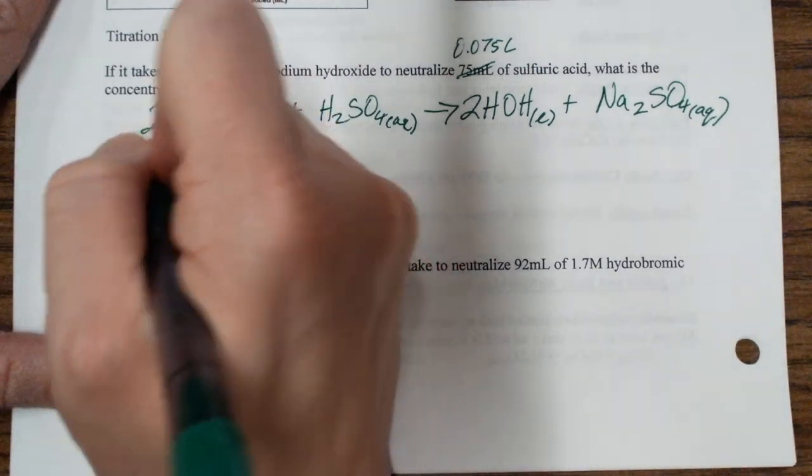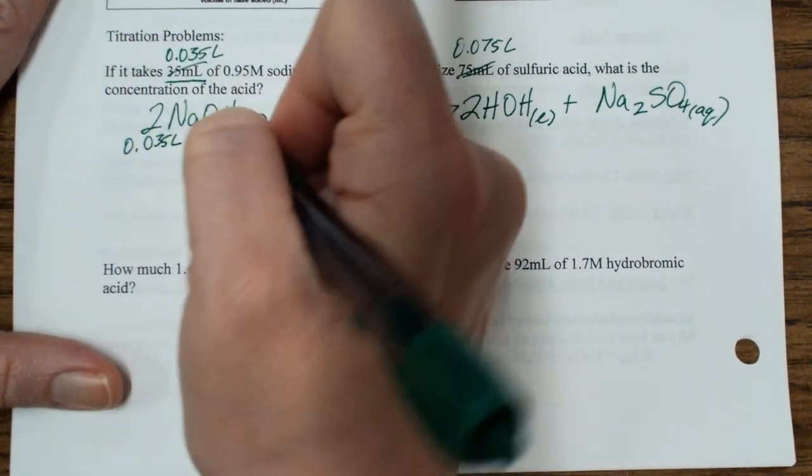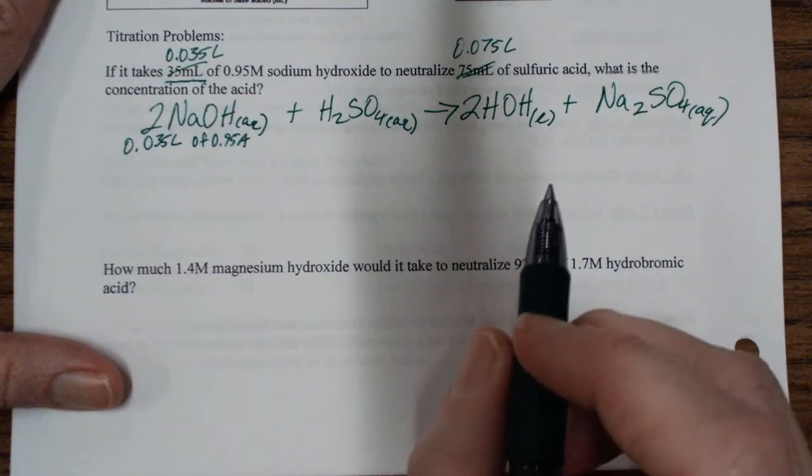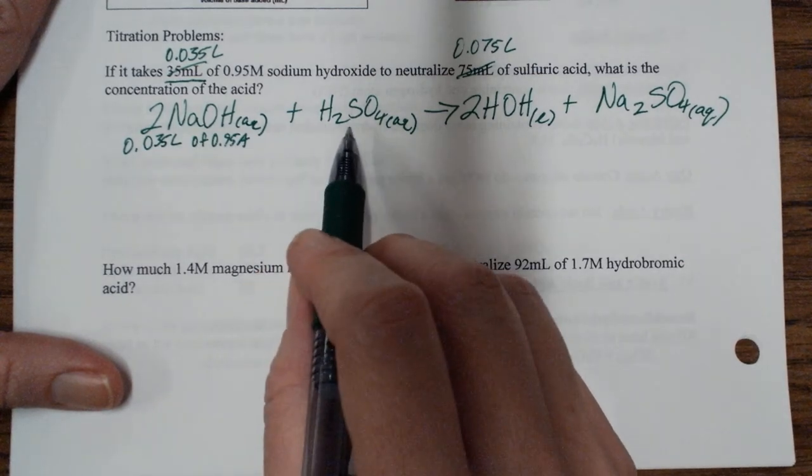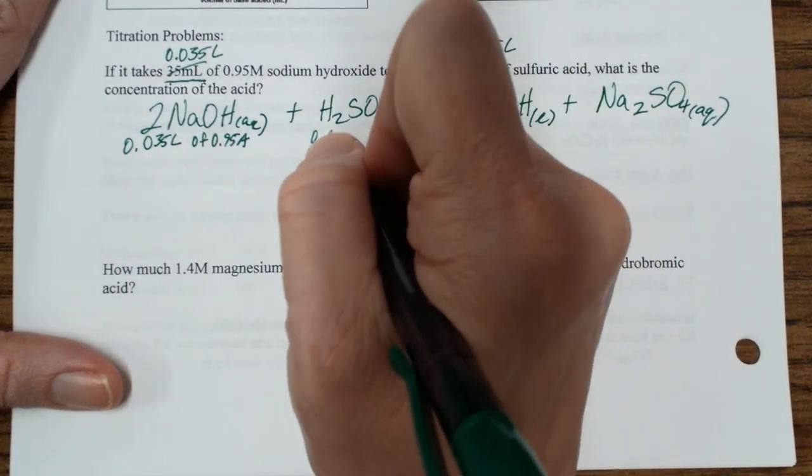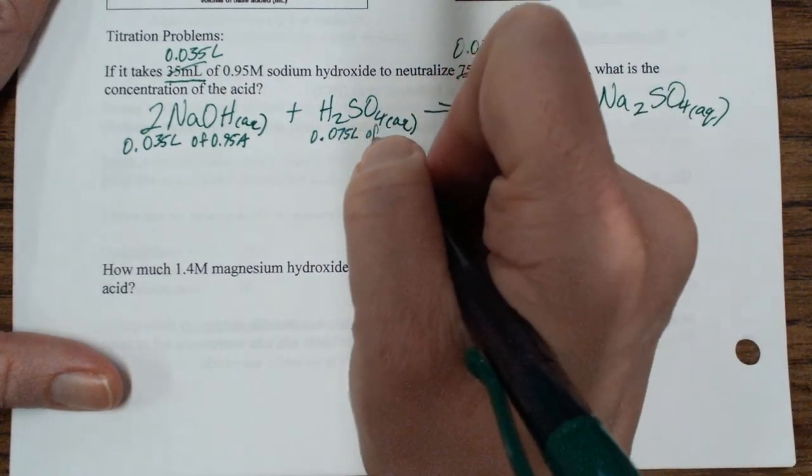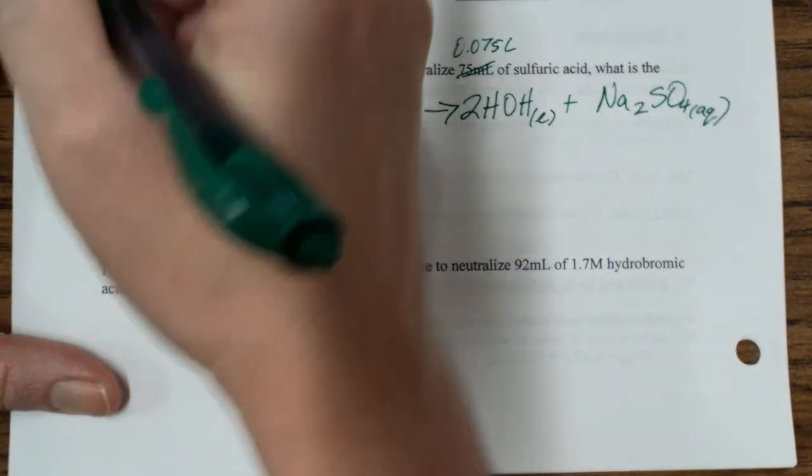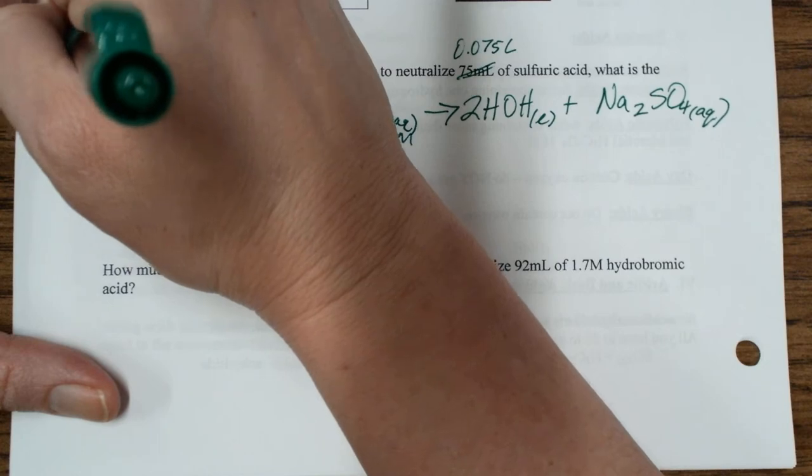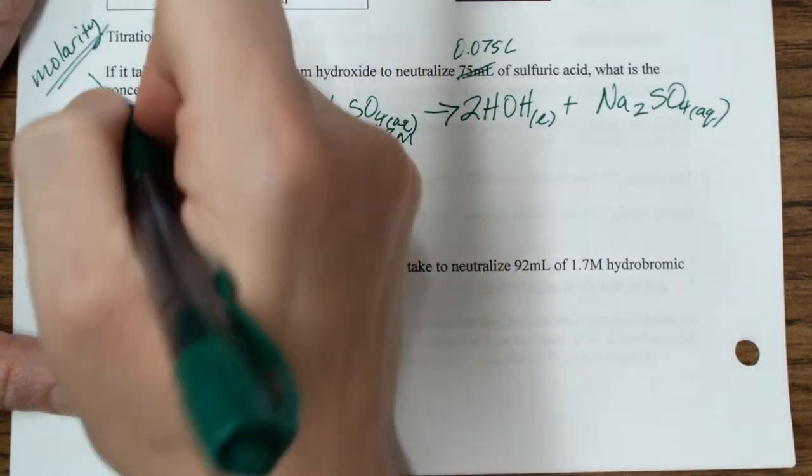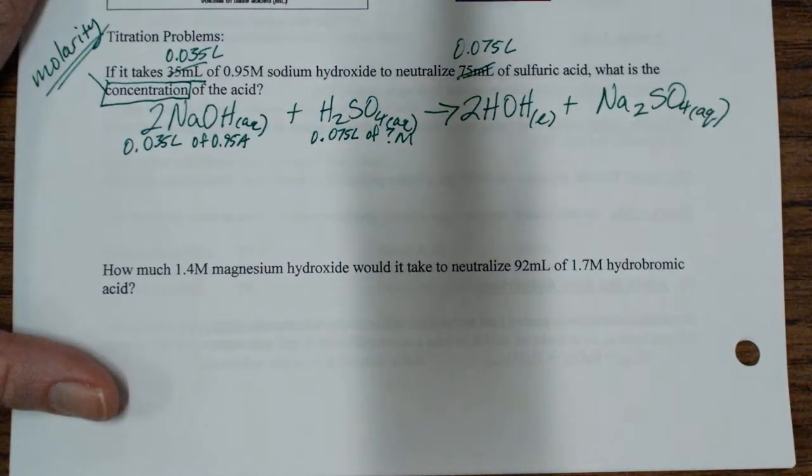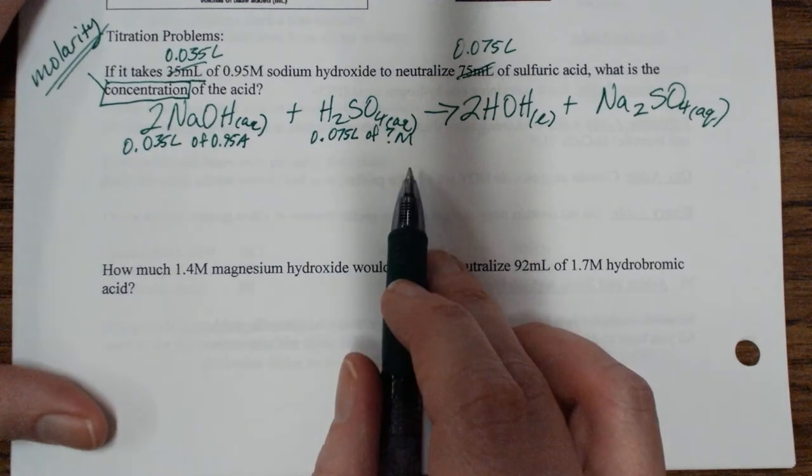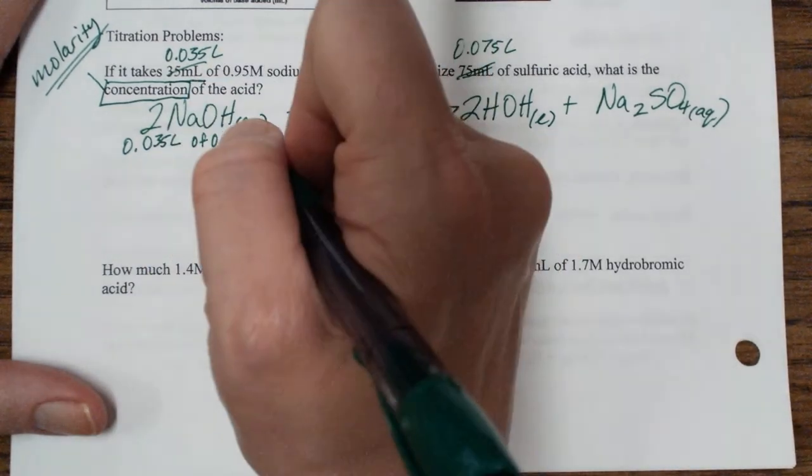So I have 0.035 liters of 0.95 molar sodium hydroxide, and I'm mixing that with 0.075 liters of, I don't know the concentration of this molarity. And that's what I want to know. What is the concentration? When you see the word concentration, that is molarity. So I want to know the concentration of the acid. I want to know the molarity.